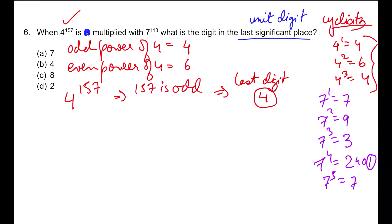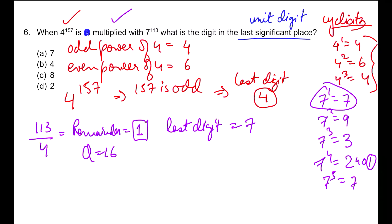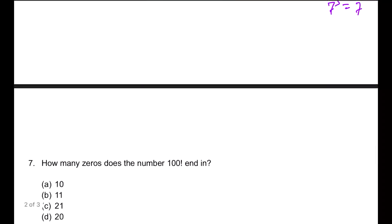What are you supposed to do? Divide the power 113 by 4 because every 4 times it's getting repeated. When you divide, you get a remainder. The remainder is 1, quotient is 16. Remainder 1 means the first power of 7, ending in 7. So the last digit here would be 7. What they're asking is to multiply these last digits. When we multiply 7 with 4, we end up with 28, and 8 is the last digit. Therefore, the answer is option C, 8. You see how you use cyclicity to get these answers.